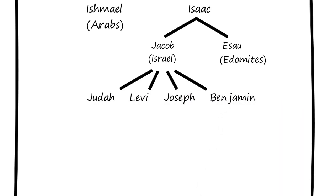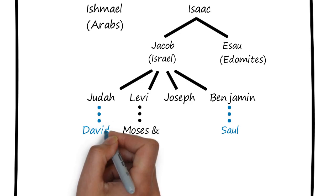Moses and Aaron were of the tribe of Levi. Saul, the first king of Israel, was a Benjamite. And David, the second king of Israel, was of the tribe of Judah.